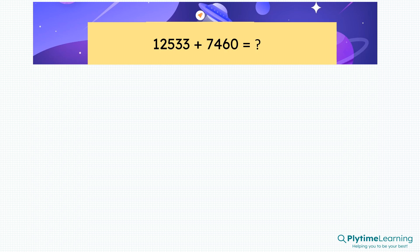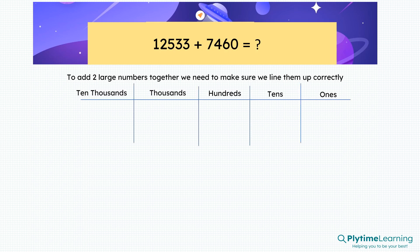12,533 plus 7,460. To add two large numbers together, we need to make sure we line them up correctly. We can use columns for this.